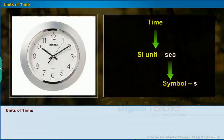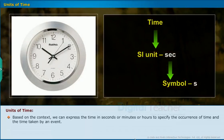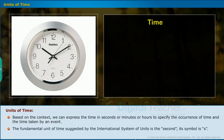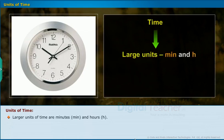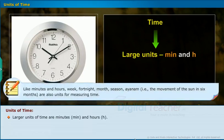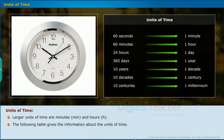Now, let us know about the units of time. Based on the context, we can express the time in seconds or minutes or hours to specify the occurrence of time and the time taken by an event. The fundamental unit of time suggested by the international system of units is the second. Its symbol is S. Larger units of time are minutes and hours. Note: like minutes and hours, week, fortnight, month, season, ayanam (that is the movement of the sun in six months) are also units for measuring time. The following table gives the information about the units of time.